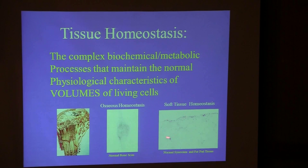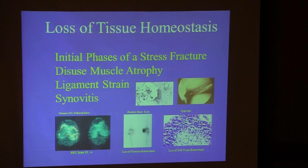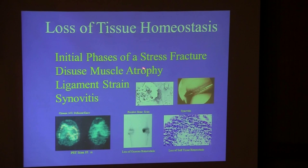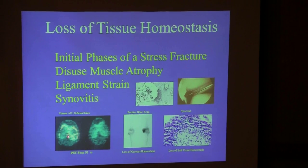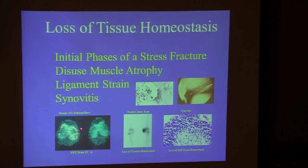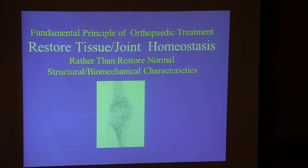This process is also true in any soft tissue, such as synovium. The loss of tissue homeostasis encompasses things we're familiar with: the initial phases of a stress fracture, disuse muscle atrophy, ligament strain, synovitis. Here's a PET scan in an ACL-deficient knee showing this loss of homeostasis in high resolution in bone.